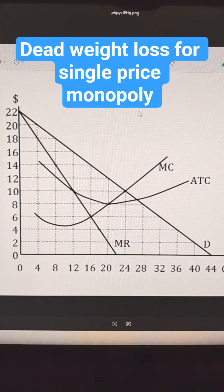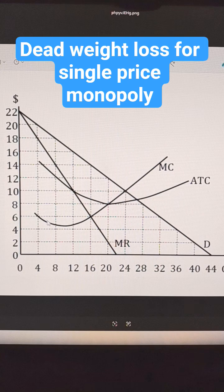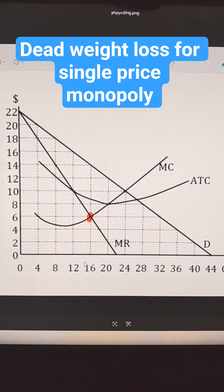If you want to find deadweight loss from a single price monopoly, first find profit maximization. That's where marginal cost equals your marginal revenue, at this point right here.